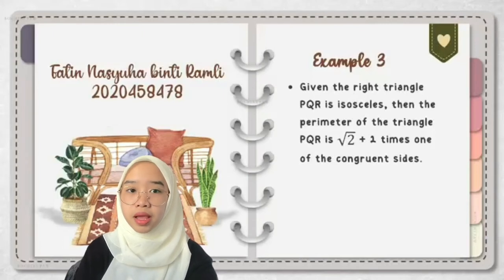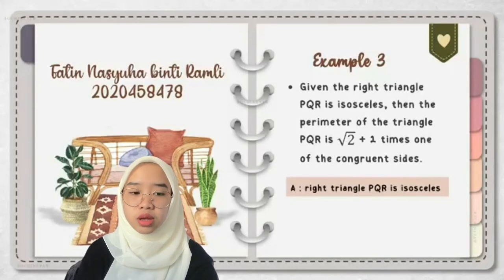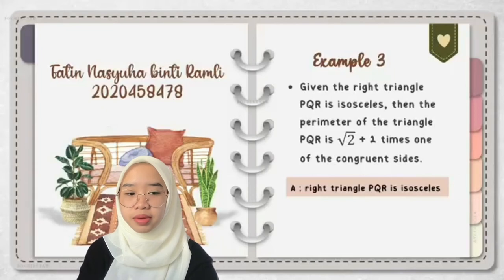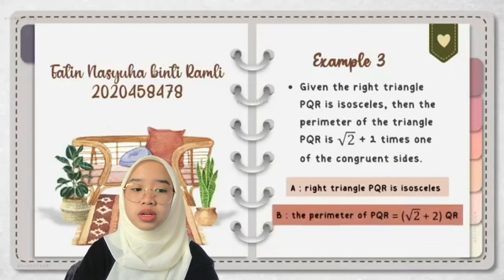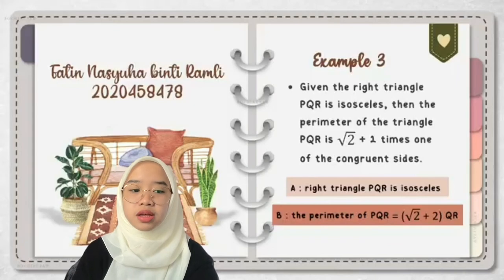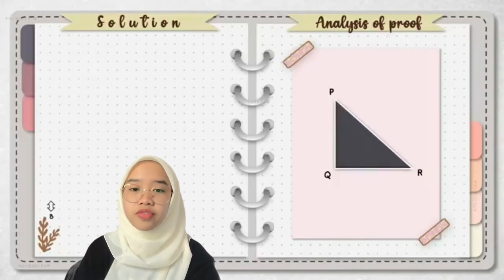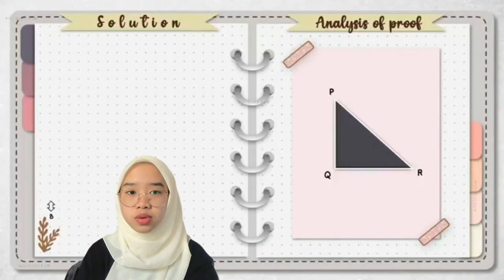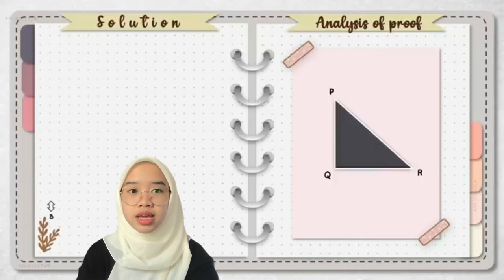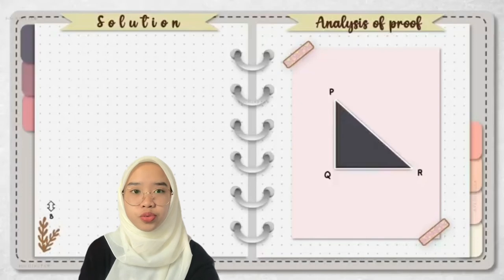We can obtain the hypothesis by looking at the statement before the word 'then'. For this question, the hypothesis is: right triangle PQR is isosceles. For the conclusion, which is B, we look at the statement after the word 'then'. For this question, the conclusion is: the perimeter of PQR equals root 2 plus 2 times QR, where QR is one of the congruent sides. I will show you the diagram of the triangle to make it easy to understand. After we find the hypothesis and conclusion, we usually start with the backward process followed by the forward process, but for this kind of question, it is not necessary to do the backward process.